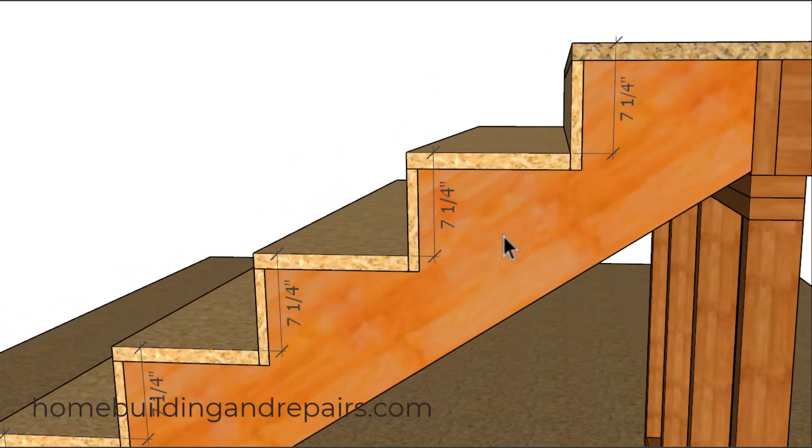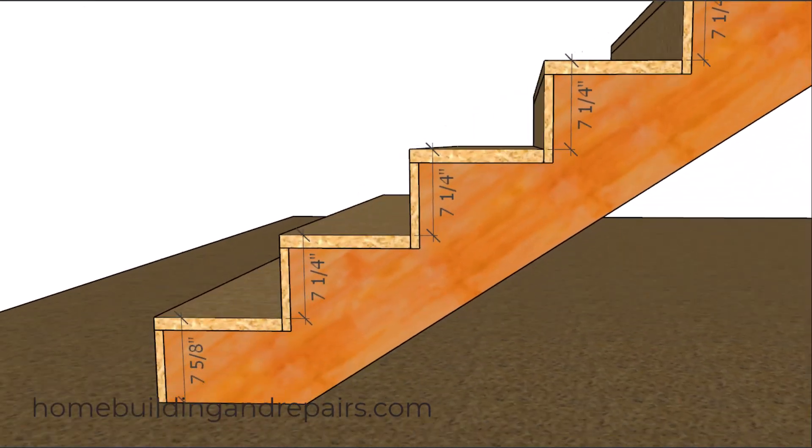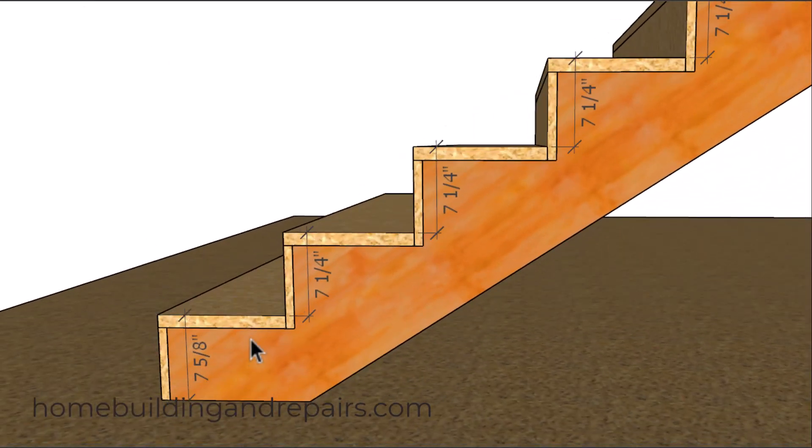What's that going to do? It's going to solve our problem at the top and create a new problem at the bottom by creating a seven and five eighths inch riser height. So instead of having the problem at the top, we now have it at the bottom.